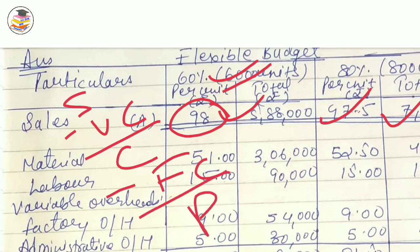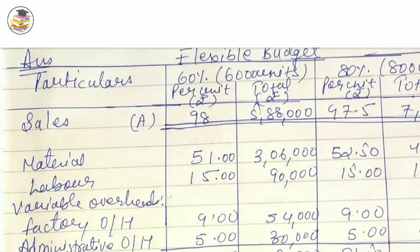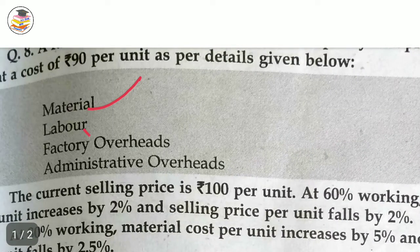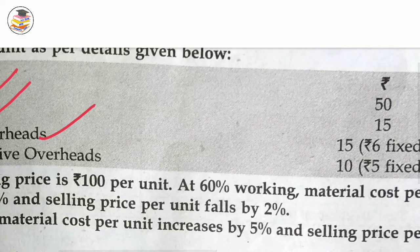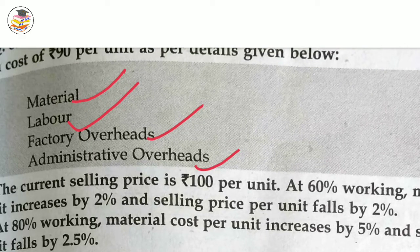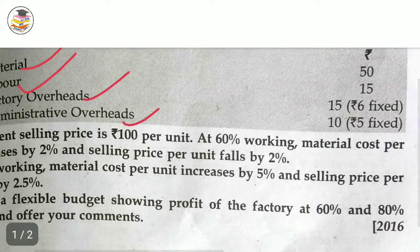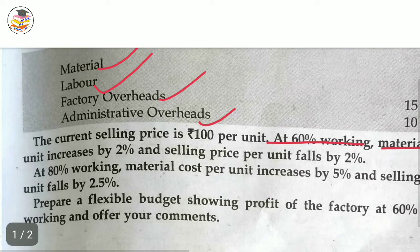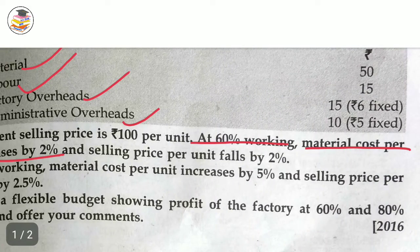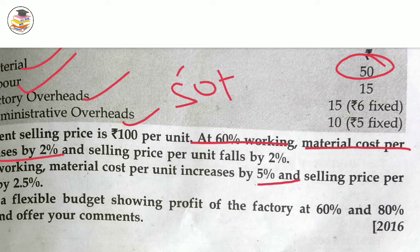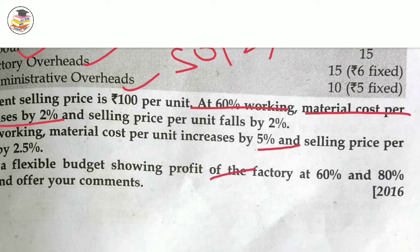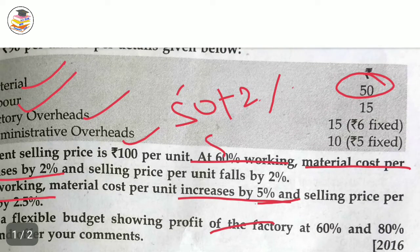If you work on 60% capacity, material cost will increase by 2%. When I work at 50% capacity, material is 50. When I work at 60%, I have to do 50 plus 2% = 51. If I work at 80% capacity, I have to do 50 plus 5% = 52.50. Now 51 × 6,000 and 52.50 × 8,000 you will calculate.